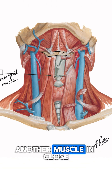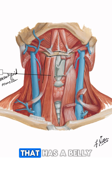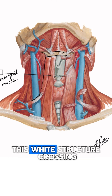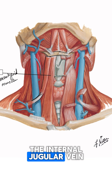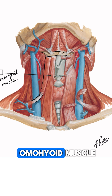Another muscle in close relation to it has a belly in the middle. It is structured crossing the internal jugular vein, and this is the omohyoid muscle.